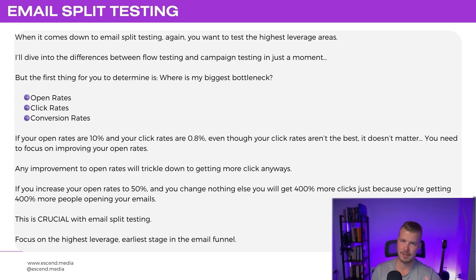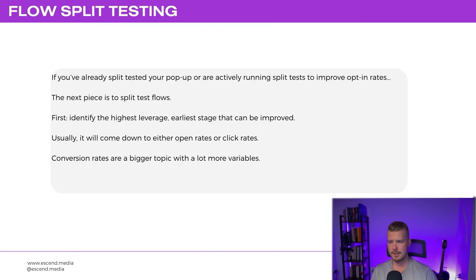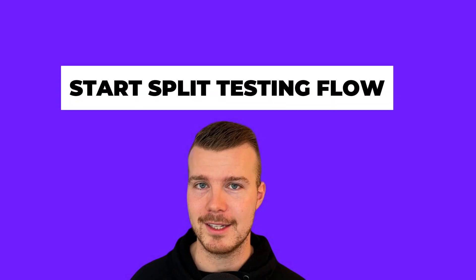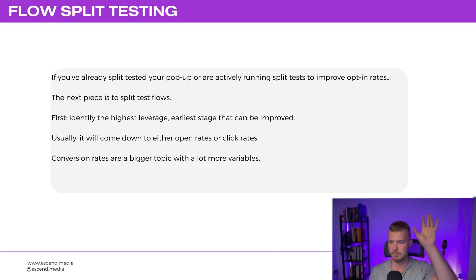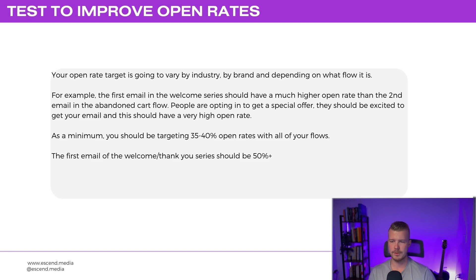With flow split testing, once you're actively running pop-up split tests, the next piece is to start split testing flows. Identify the highest leverage, earliest stage that can be improved — usually open rates or click rates. Conversion rates involve many more variables like your website, offer, and product. So what tests can you run to improve open rates? Your open rate target will vary by industry and by brand.